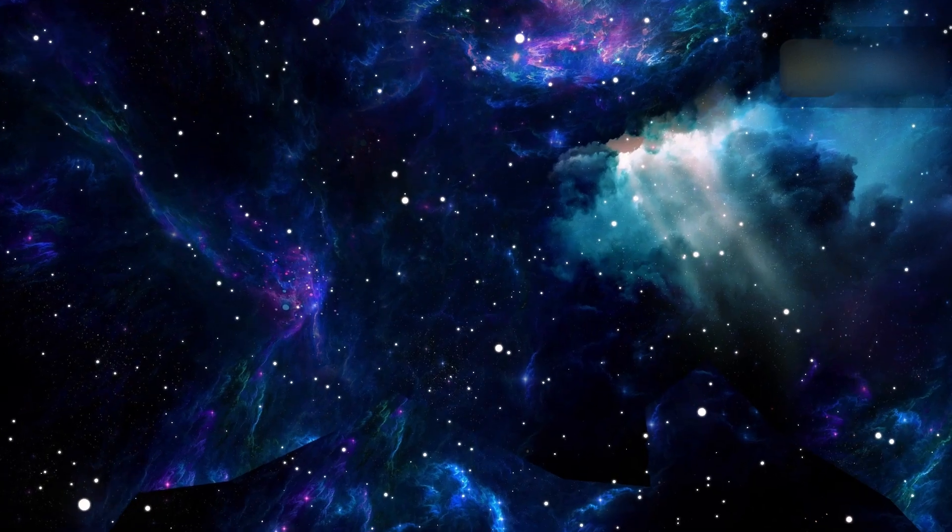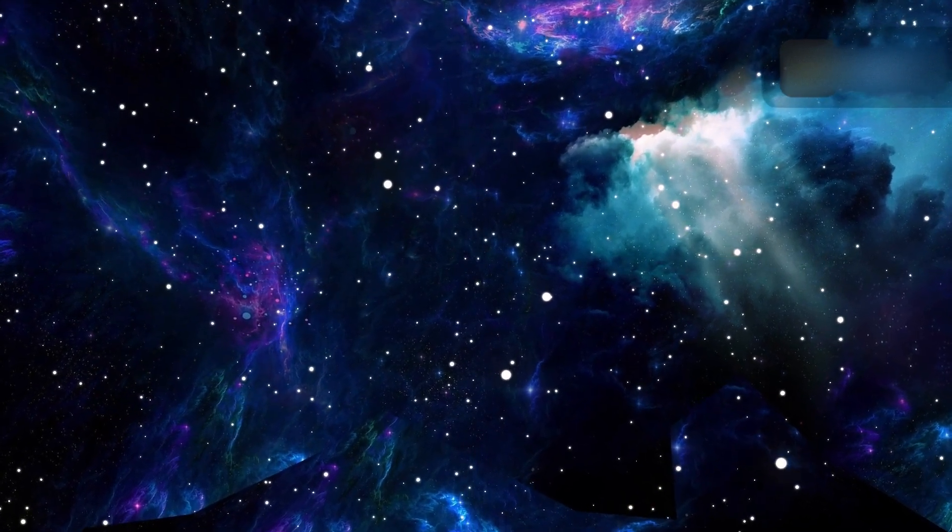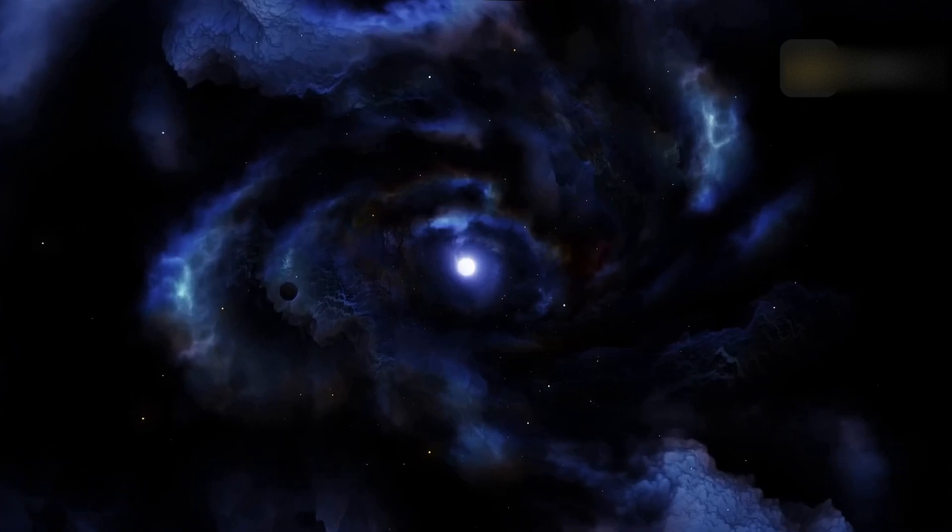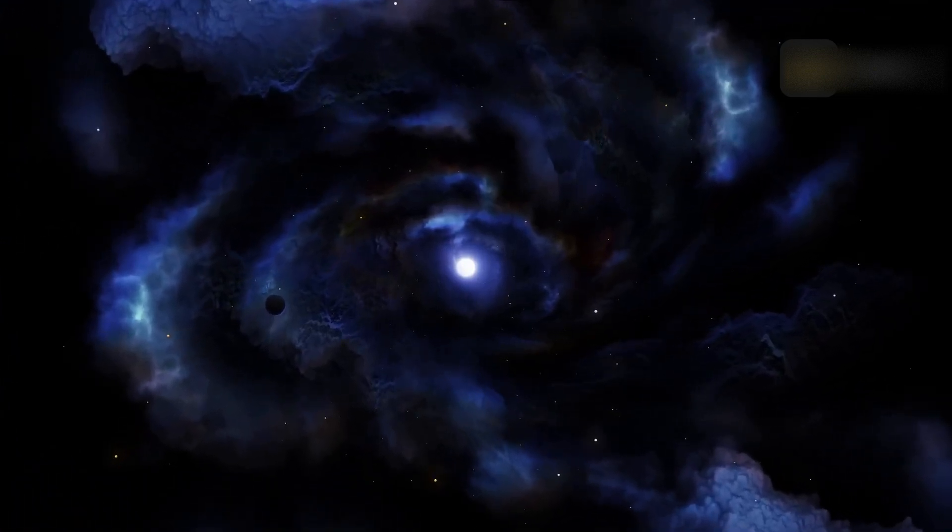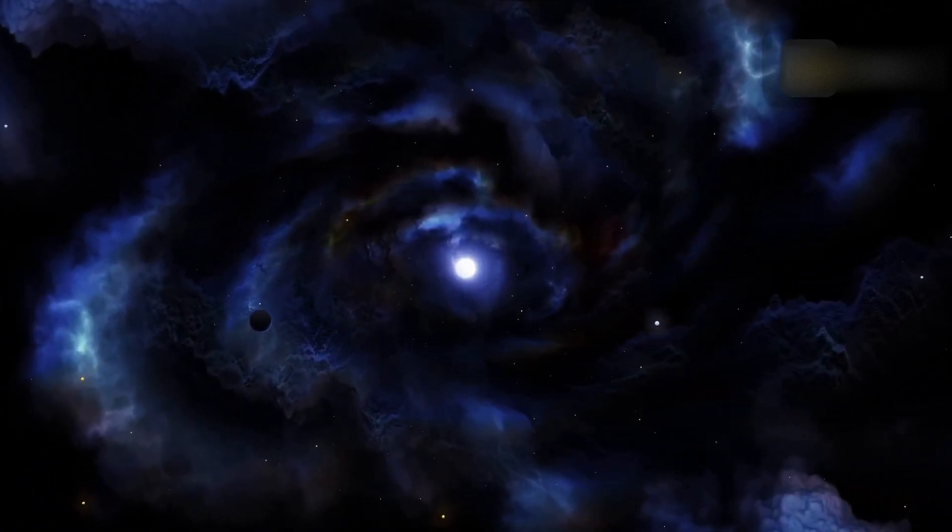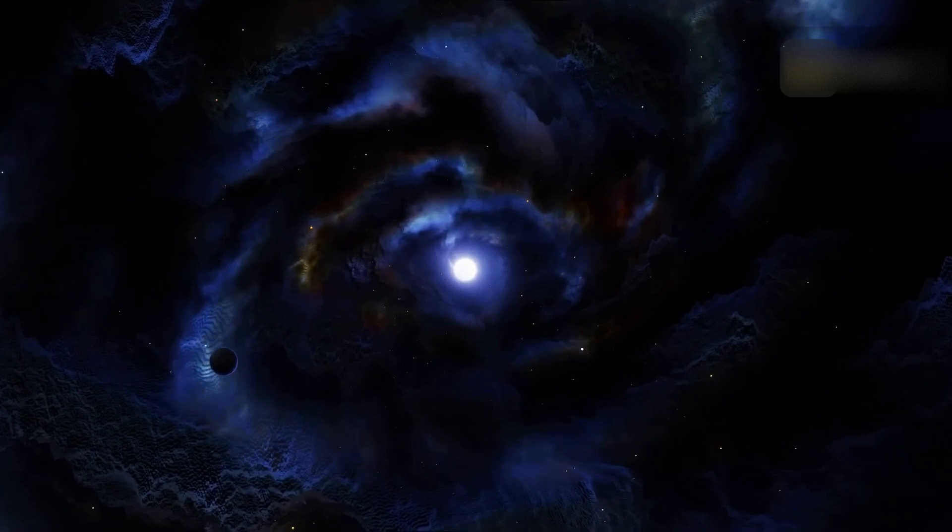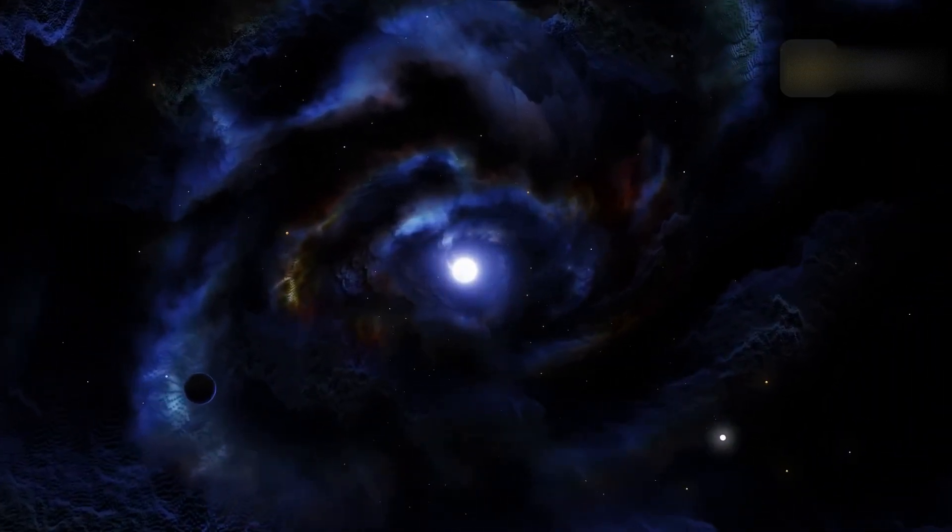It is said that the size of the observable universe is about 93 billion light-years across. To get an idea of how big it is, it helps to look at it in terms of our closest celestial neighbors in the solar system. The moon, the Earth's only natural satellite, is the closest astronomical object to us.